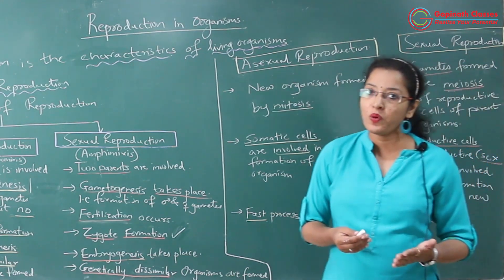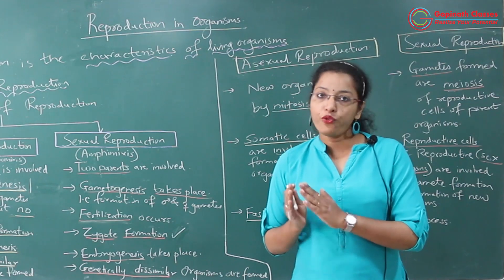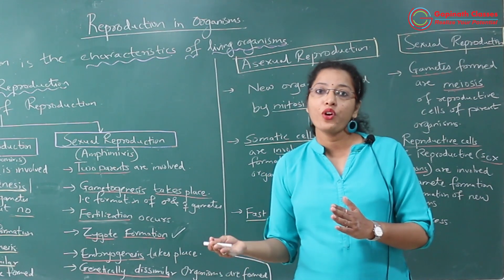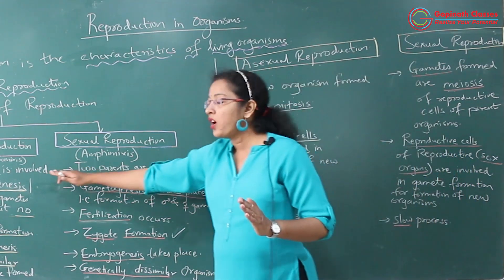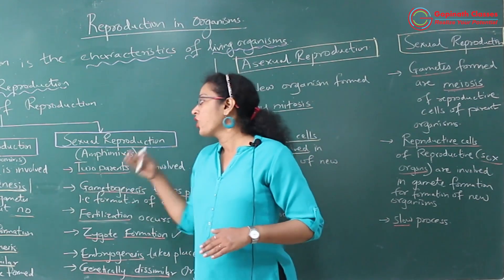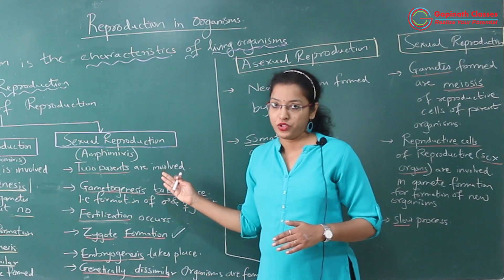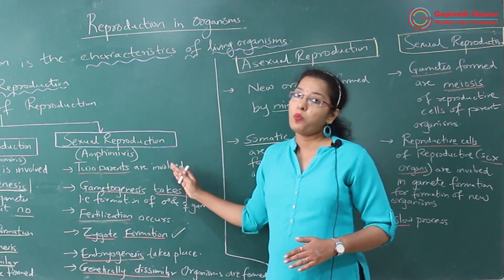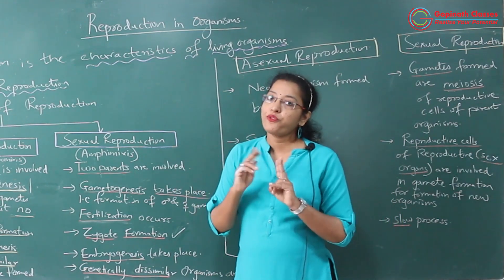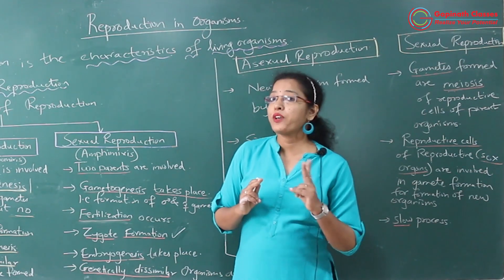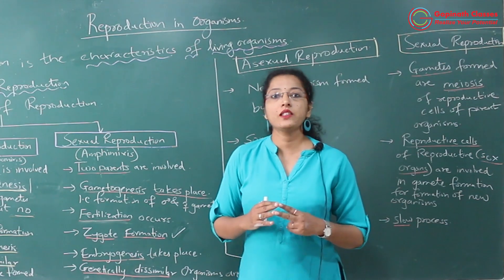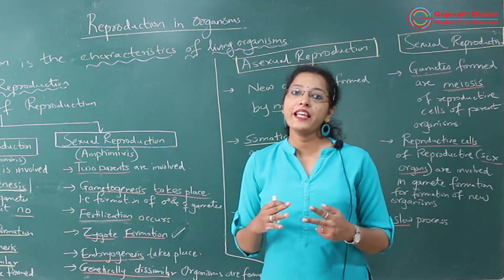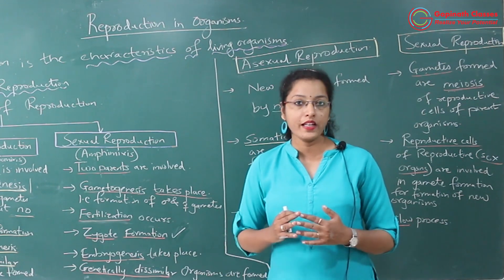Whenever life originated on Earth, simpler organisms — prokaryotes — were formed first, and afterwards prokaryotes led to the formation of eukaryotes. Simple organisms show asexual reproduction, whereas complex organisms show sexual reproduction. Out of the two modes of reproduction, sexual reproduction is the more complex one, because two different parents are involved for the formation of two different gametes, giving rise to variation and recombination in the new organism.